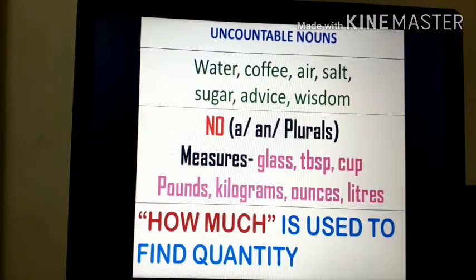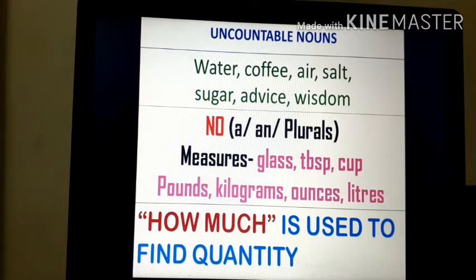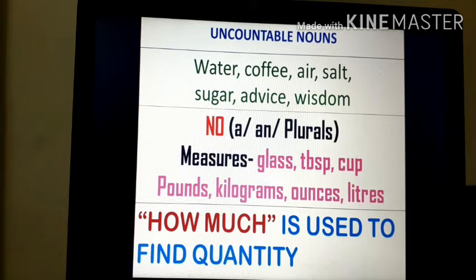Here, I have written names of some uncountable things: water, coffee, air, salt, sugar, advice and wisdom. These are all uncountable nouns as they cannot be counted. Water and coffee are liquids. Air is a gas. Salt and sugar are so small that even if you try to count the individual particles, that would be an extremely difficult task. Whereas advice and wisdom are abstract nouns as they are feelings and ideas. Most abstract nouns are uncountable.